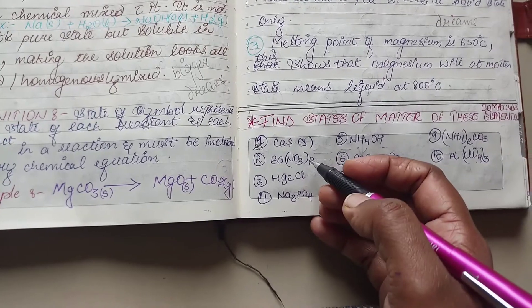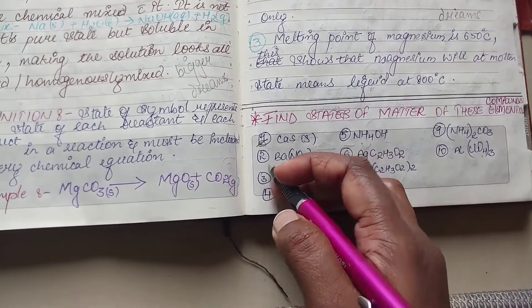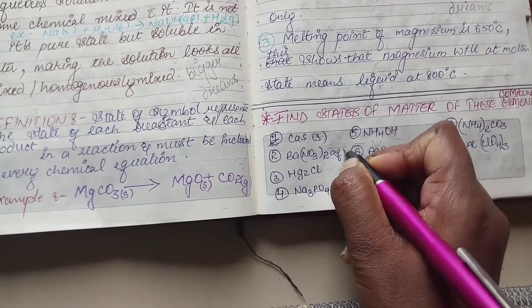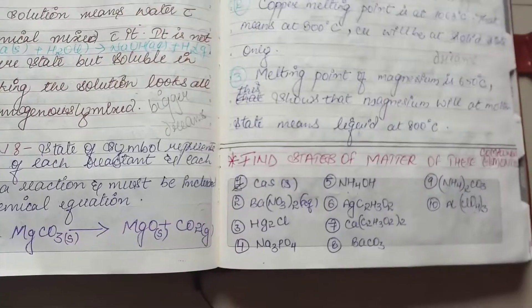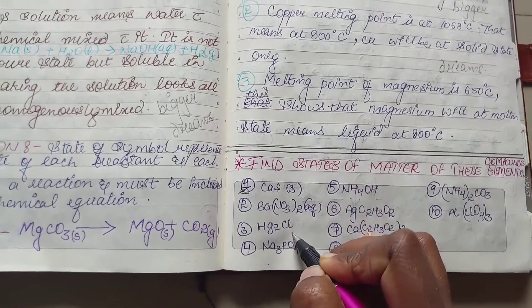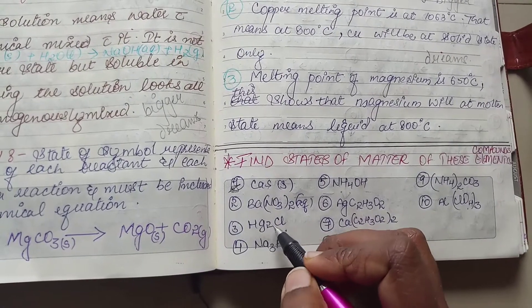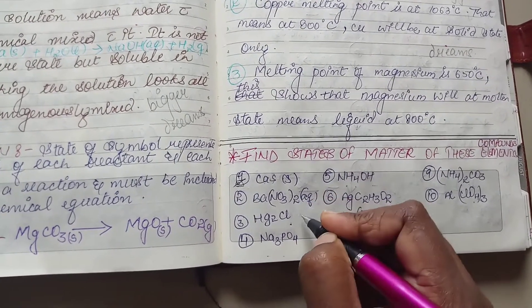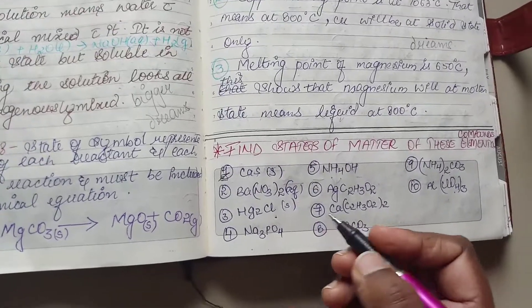NO3, nitrate is soluble. If it has no exception, this is going to be aqueous in nature. Now, Cl is halogen but there is an exception with Ag which is making it insoluble. Because of that reason it becomes solid in nature.